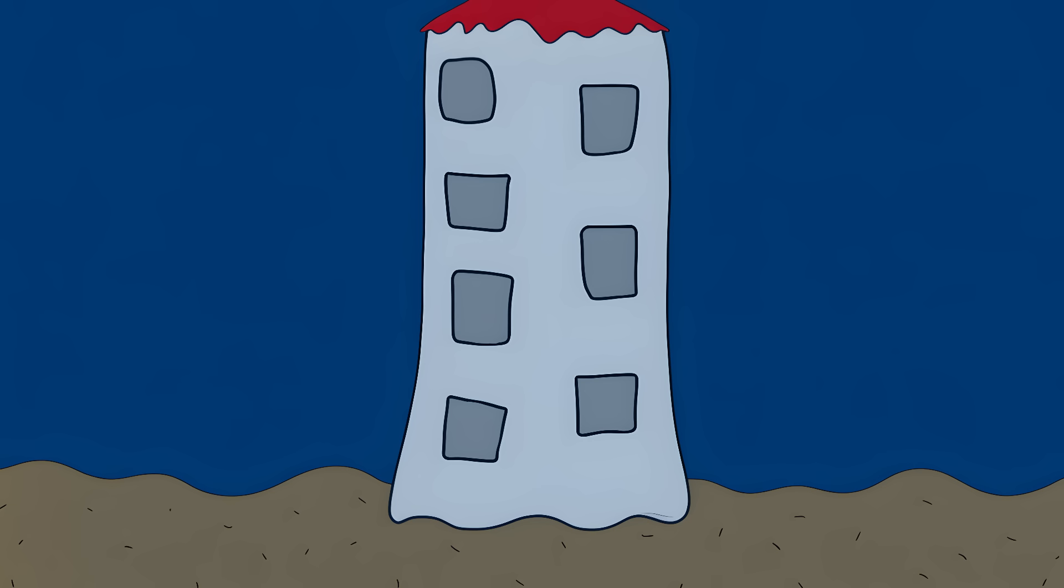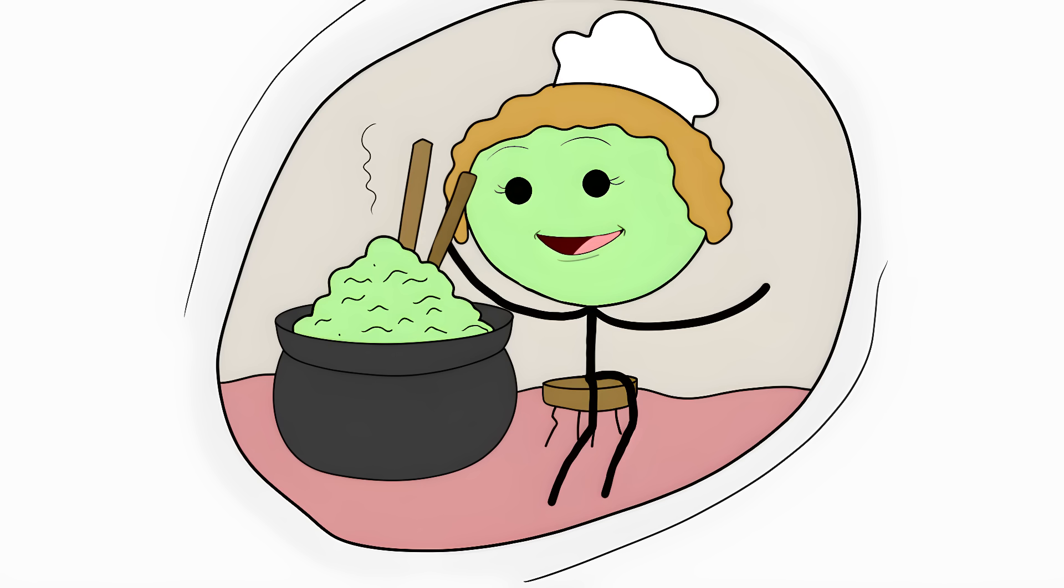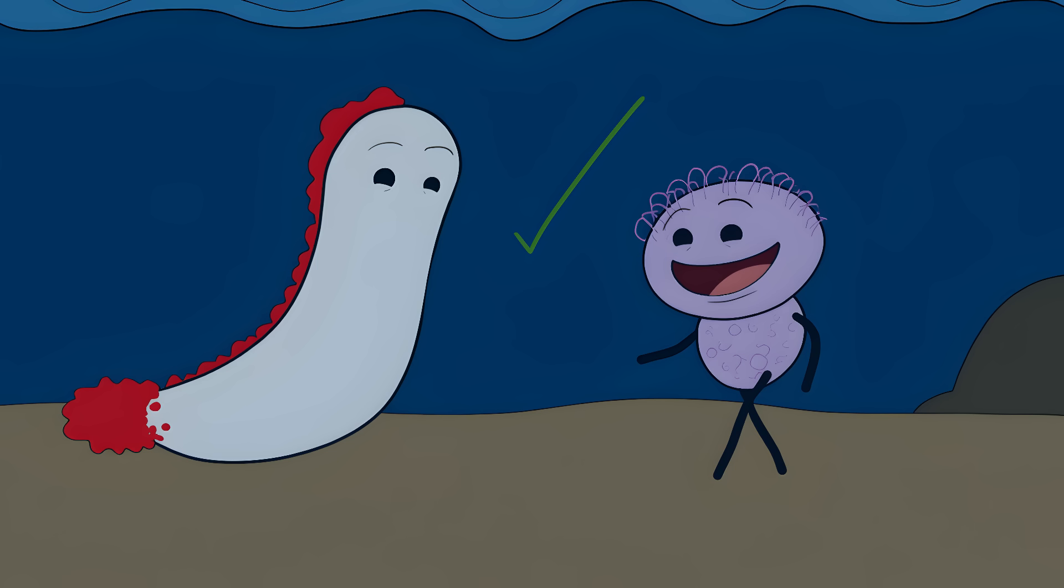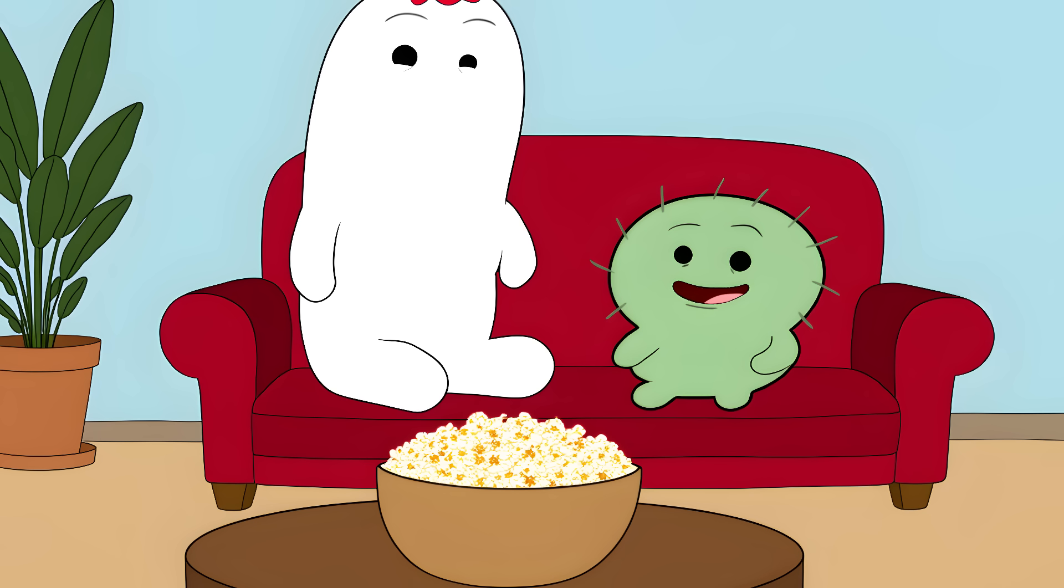These bacteria convert poison into calories, and those giant tube worms without mouths are basically walking apartment buildings for bacteria. The bacteria live inside them, cooking up meals from toxic chemicals. The worm provides housing, the bacteria provide food. It's the most successful roommate situation in history.